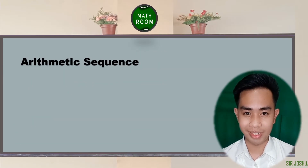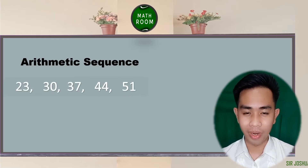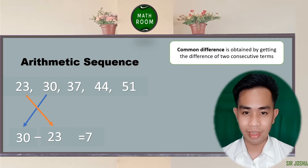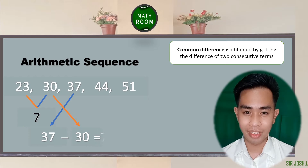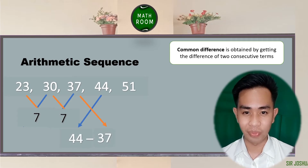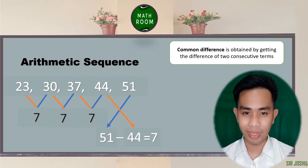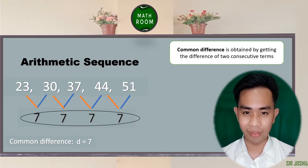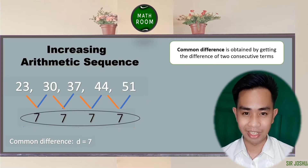Given the arithmetic sequence 23, 30, 37, 44, 51 — the common difference can be obtained by getting the difference of two consecutive terms. The second term, 30, minus the first term, 23, is 7. The third term, 37, minus the second term, 30, is also 7. The fourth term, 44, minus the third term, 37, gives you 7. The fifth term, 51, minus the fourth term, 44, is also equal to 7. Since the difference in each consecutive term is 7, the common difference d is equal to 7. Since the common difference is positive, this is an example of an increasing arithmetic sequence.